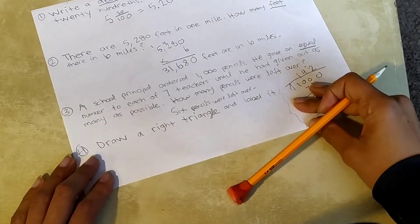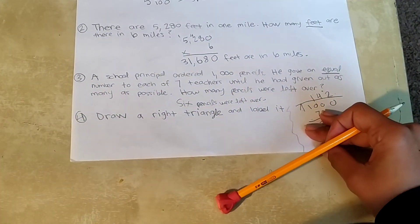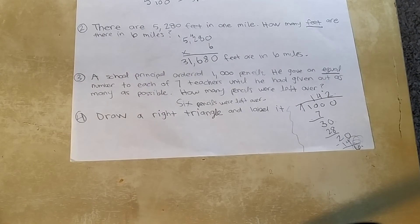Let's do the last problem. Draw a right triangle and label it. Okay. So I want my students to be reviewing what is an acute triangle, what is an obtuse triangle, and what is a right triangle. Okay. When I think of right, I'm looking for a right angle. What is a right angle? A right angle is an angle that measures 90 degrees. Like this.